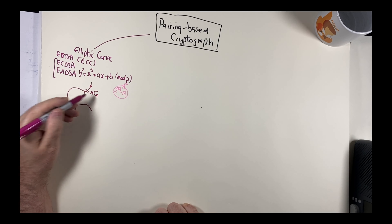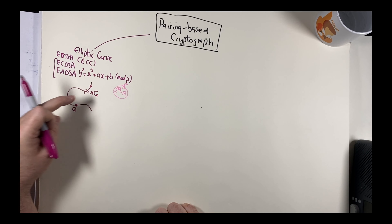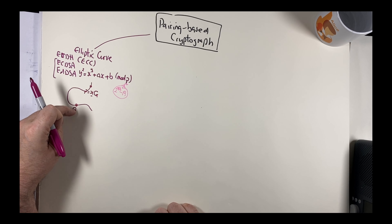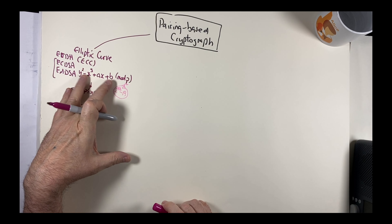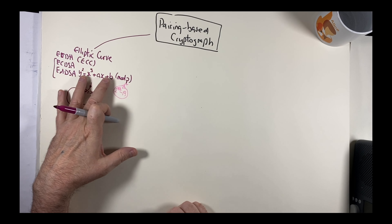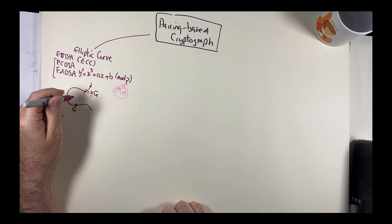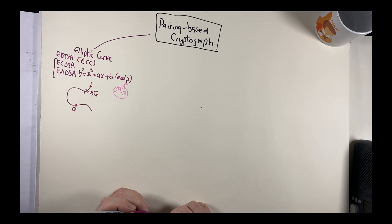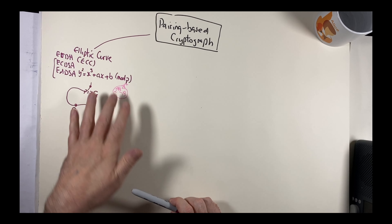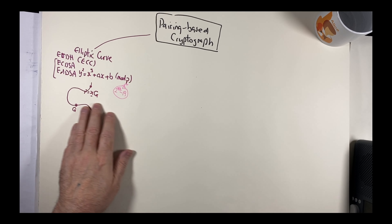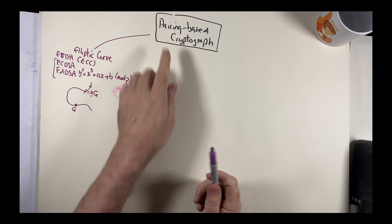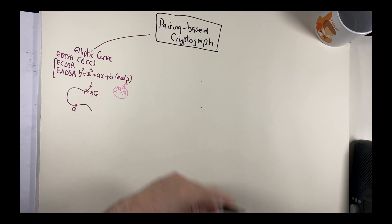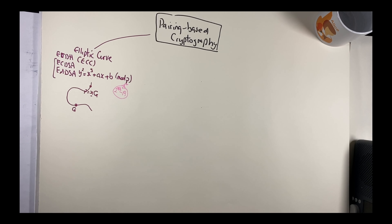We can expose the public key to anyone, and they will not be able to derive the value of X — our secret key — even though they know G (the base point), P (the prime number), and the public key. When we apply the finite field method, we end up with a whole set of points representing our elliptic curve equation.